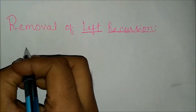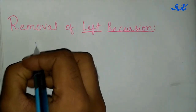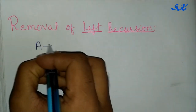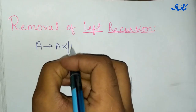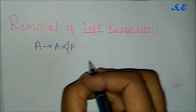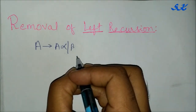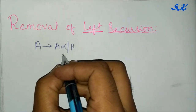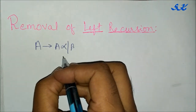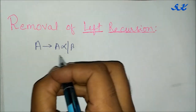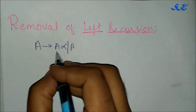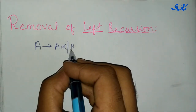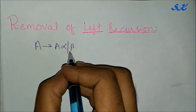Consider this production A to A alpha beta. It is said to be left recursion if A is a non-terminal and alpha beta is a string of grammar symbols.